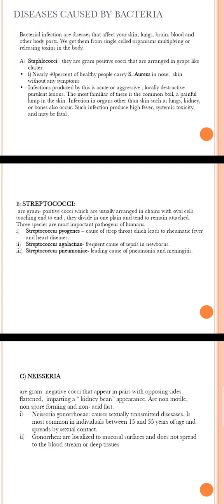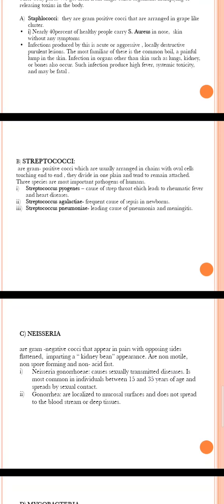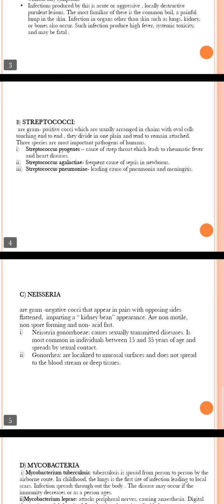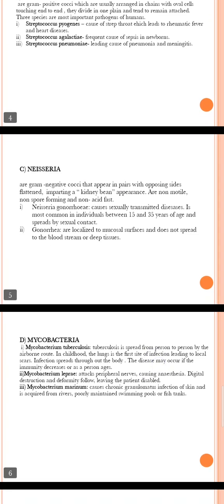The second bacteria is Streptococci. They are gram-positive cocci usually arranged in chains with oval cells touching end to end. They divide in one plane and tend to remain attached. Three species are the most important pathogens: Streptococcus pyogenes, which causes strep throat leading to rheumatic fever and heart disease; Streptococcus agalactiae, a frequent cause of sepsis in newborns; and Streptococcus pneumoniae, which leads to pneumonia and meningitis.